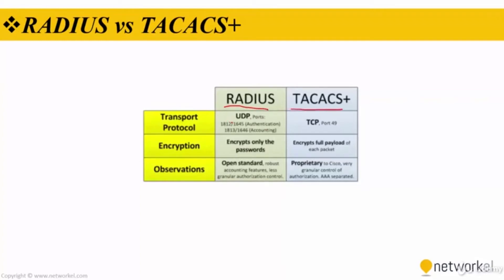Here are some differences between RADIUS and TACACS+. RADIUS uses UDP while TACACS+ uses TCP. RADIUS encrypts only the passwords while TACACS+ encrypts the full payload of each packet. Also, RADIUS is an open standard while TACACS+ is a Cisco proprietary protocol.